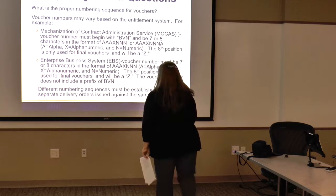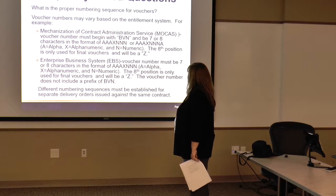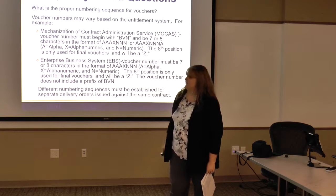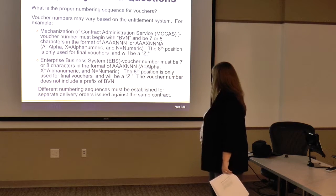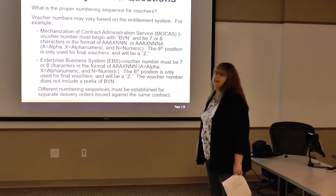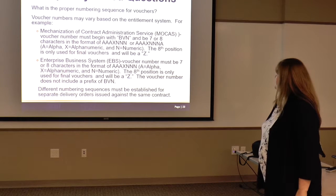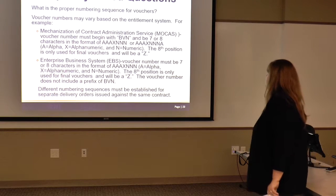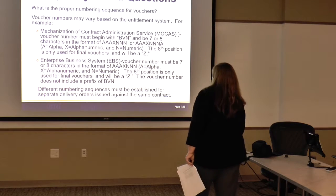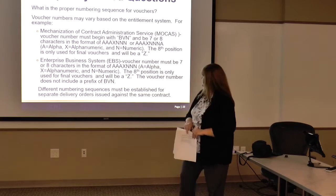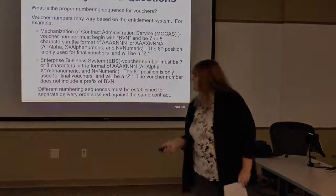What is the proper numbering sequence for vouchers? The voucher number must begin with BN and be seven or eight characters in the format AAAXNNN or AAAXNNNA, where A means alpha, X means alphanumeric, and N means numeric. The eighth position is only used for a final voucher and will be the letter Z. For EDI vouchers, the number must also be seven or eight characters in the format AAAXNNN. Different numbering sequences must be established for separate delivery orders against the same contract.